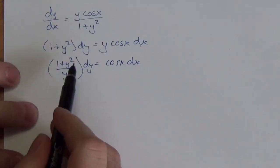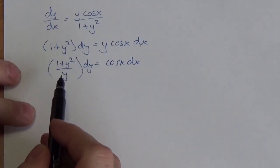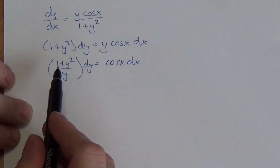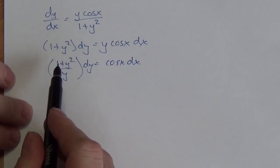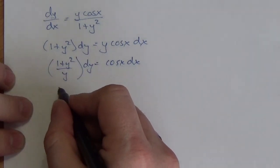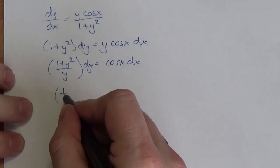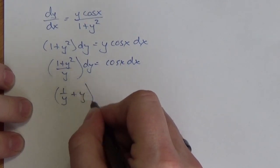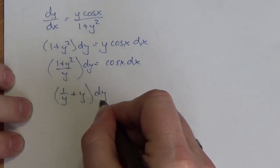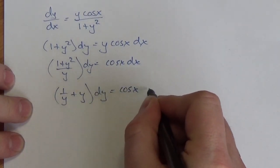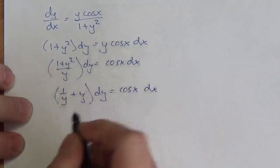At first this might not look like you can do much to integrate it here, but remember you can distribute the denominator to both terms in the numerator. So this becomes 1 over y plus y dy is equal to cosine of x dx.